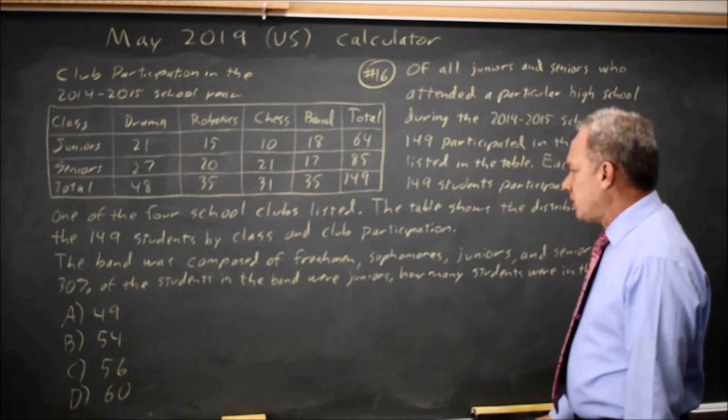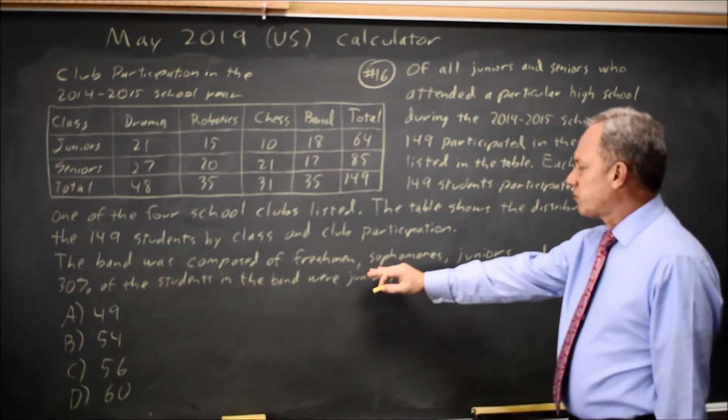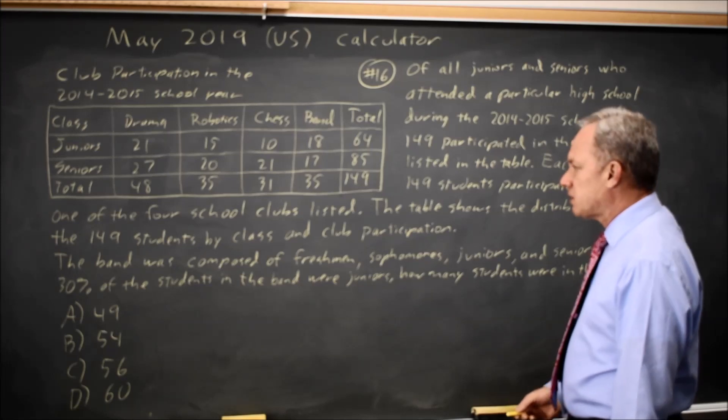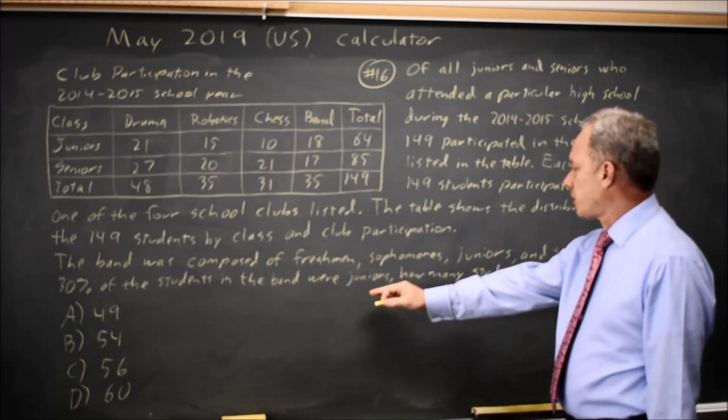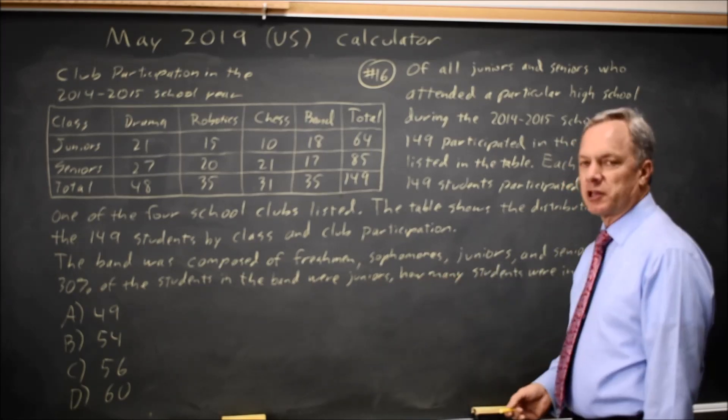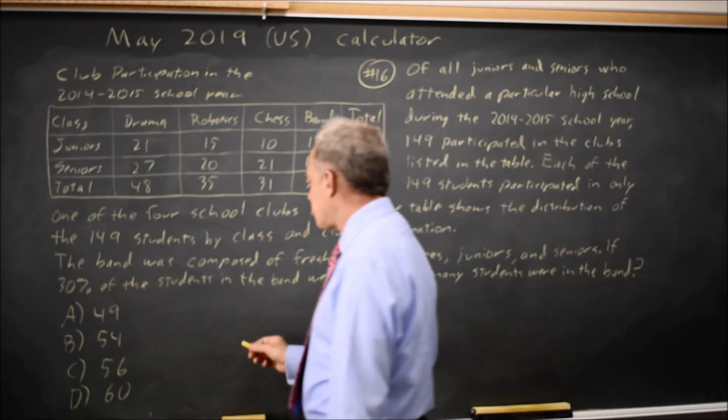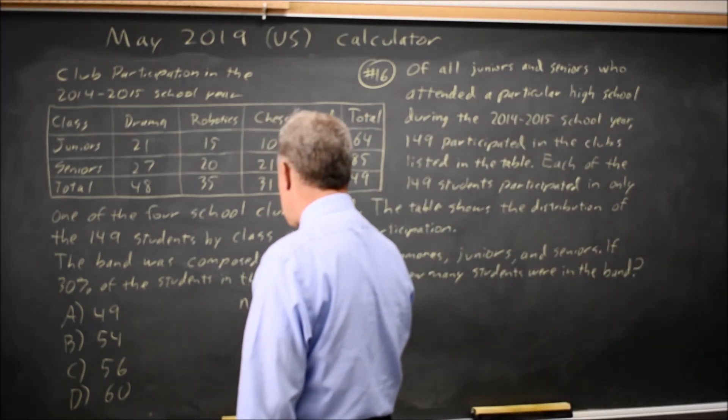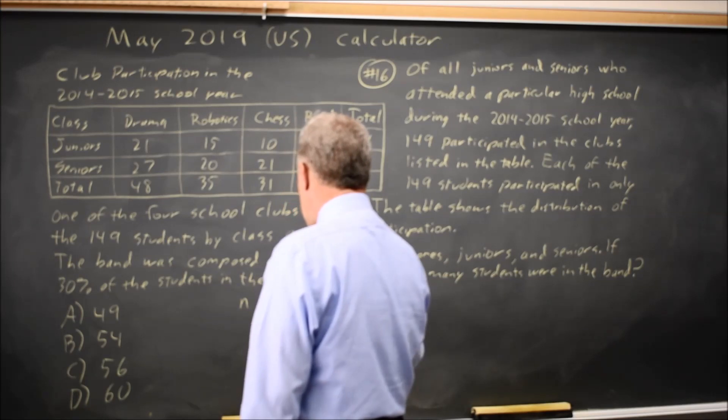And they ask if there are also freshmen and sophomores in the band, and 30% of the students in the band were juniors, how many students were in the band? So if I say there are n students in band,